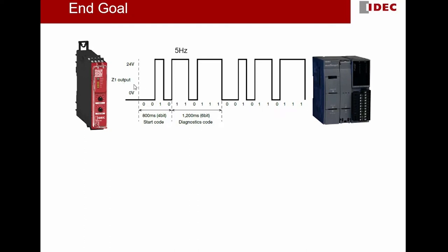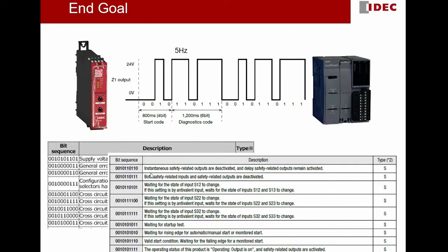We connect this Z-1 pulse output to our FC6A+ PLC and we will write a simple program to decode the diagnostic code so that by using this simple program we know the status of this safety relay. We will take reference from the HR6S safety relay manual to know the meaning of each diagnostic code and from there we know the status of the HR6S safety relay.